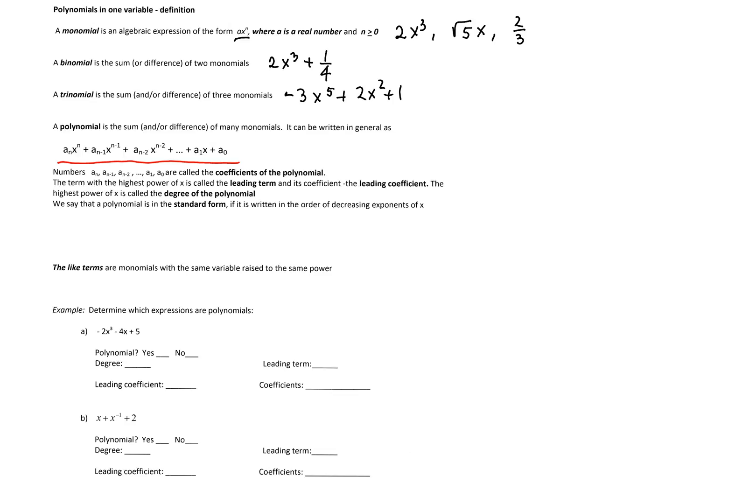The highest power of x is called the degree of the polynomial. With polynomials come what we call like terms — like terms are monomials with the same variable raised to the same power. For example, 2x cubed and square root of 5x cubed are like terms, because the variable and the exponent are both the same.